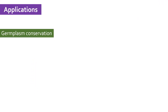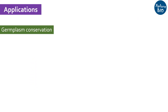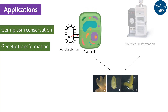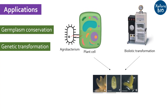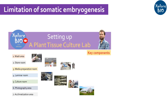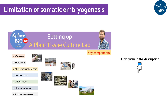Somatic embryogenesis is a promising way to conserve germplasm resources of rare and threatened species. It also finds application in genetic transformation through Agrobacterium or biolistic methods. However, the major issue with somatic embryogenesis is that it requires a sophisticated plant tissue culture laboratory to be produced.